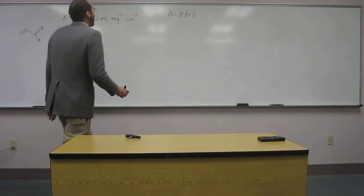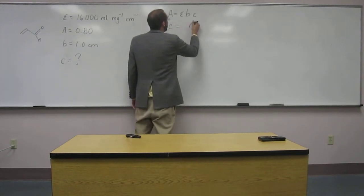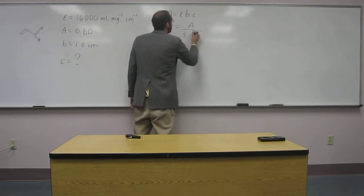So, of course, all we're going to do is rearrange this equation. So C equals A divided by epsilon B, like that.